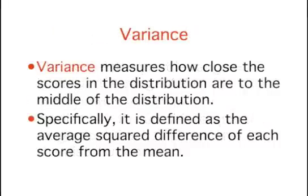Variability can also be defined in terms of how close the scores in the distribution are to the middle of the distribution. Using the mean as the measure of the middle of the distribution, the variance is defined as the average squared difference of the scores from the mean.